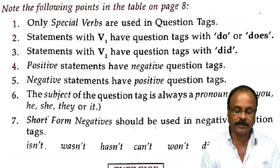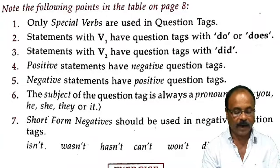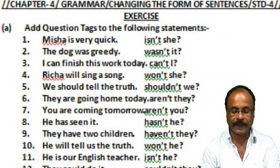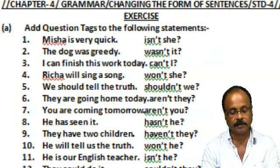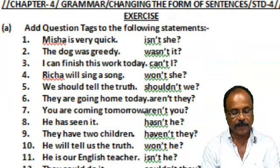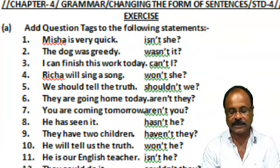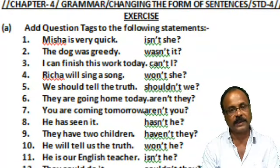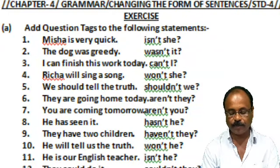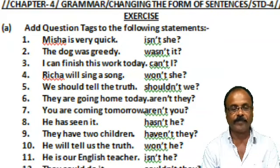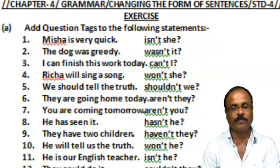Now let us do the exercises as well. Add question tags to the following statements. Group A. Number 1: 'We must see.' Number 2: 'We should tell the truth.' — 'Shouldn't we?' Number 3: 'They are going home today.' — 'Aren't they?' Number 4: 'You are coming tomorrow.' — 'Aren't you?'